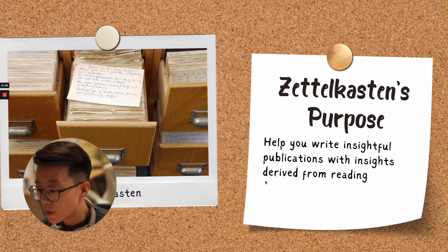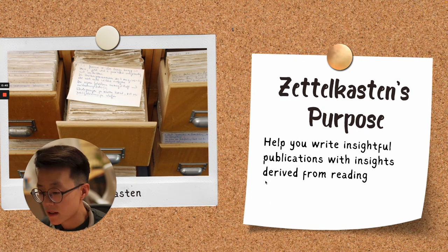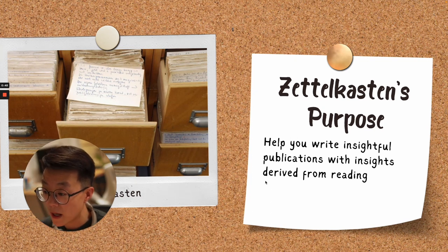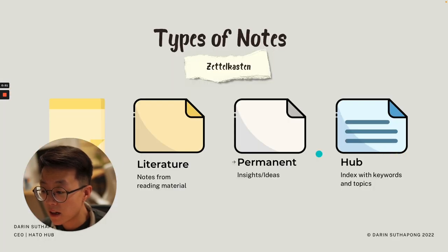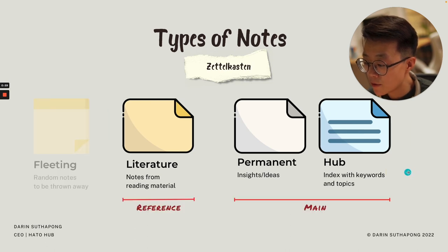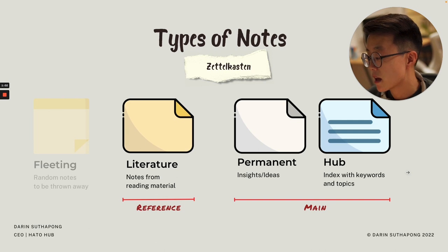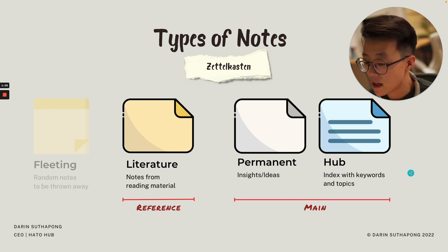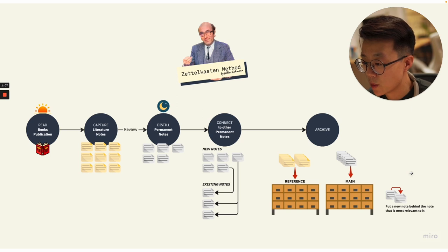First, let's start with the purpose of the original Zettelkasten. Zettelkasten was created to help scholars write better publications. There are four types of notes that we all know by now, and these notes are part of the bigger system, while fleeting notes are not part of any system because they are meant to be thrown away very quickly.